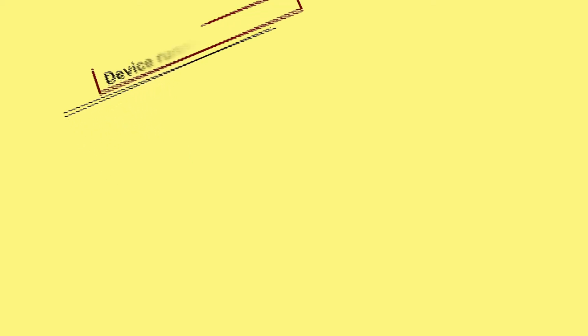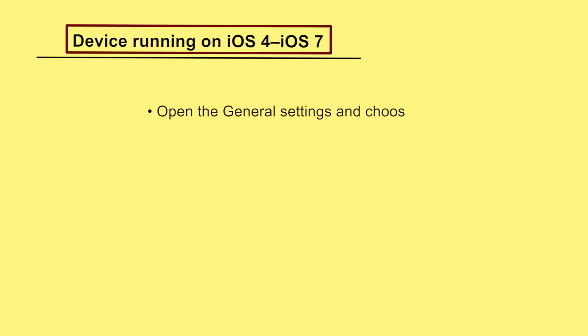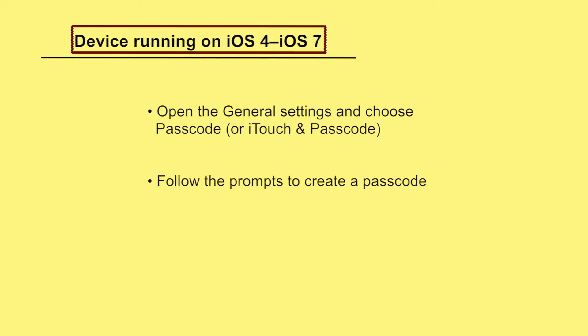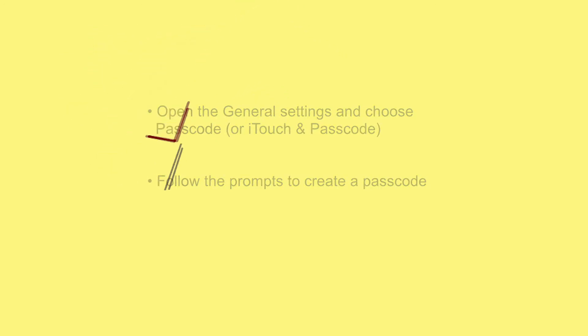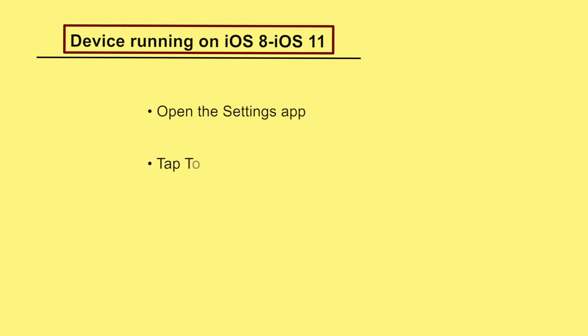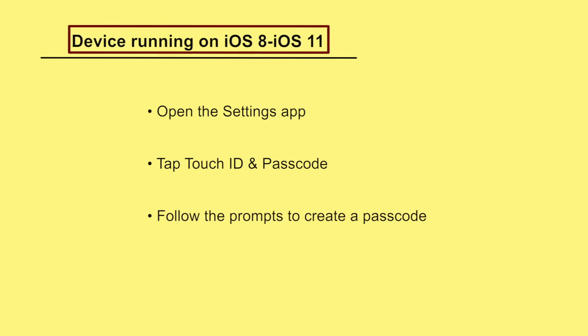If your device is running on iOS 4 to iOS 7, open the general settings and choose passcode, then follow the prompts to create a passcode. And if your device is running on iOS 8 to iOS 11, open the settings app, tap Touch ID and Passcode, and follow the prompts to create a passcode.